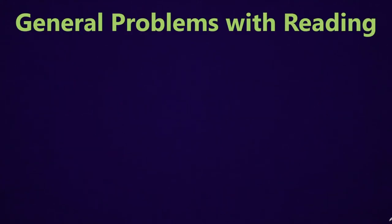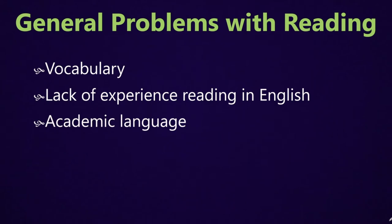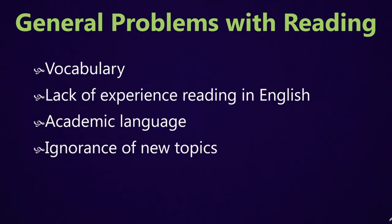First, there are reading skills. What are the general problems with reading for English language learners? First, there's vocabulary, as we've discussed quite a bit. There's lack of experience reading in English, so there's a lack of reading fluency. There's the academic language they might have to deal with if they're going to college. And then there's ignorance of new topics — so if they're learning something new, they're not only having to deal with the language, they're also having to deal with new ideas.